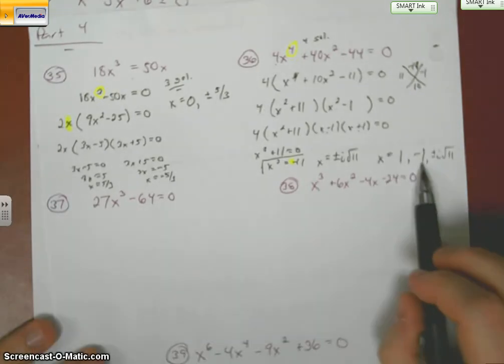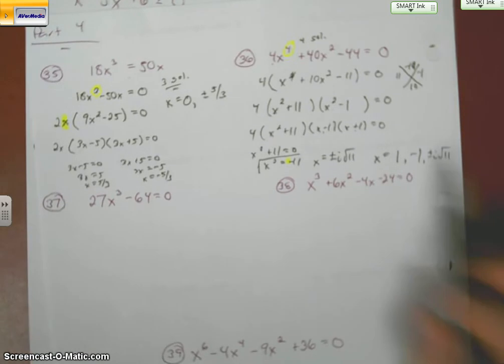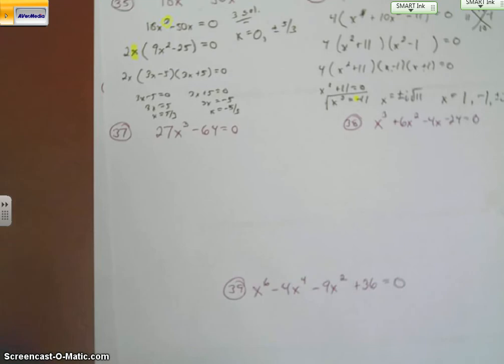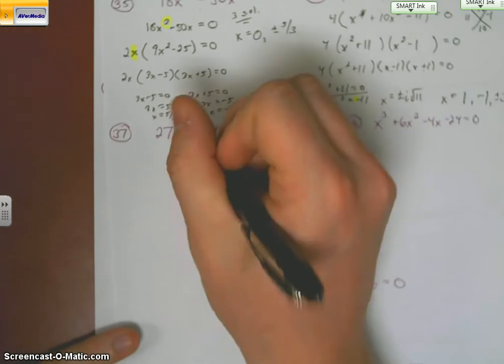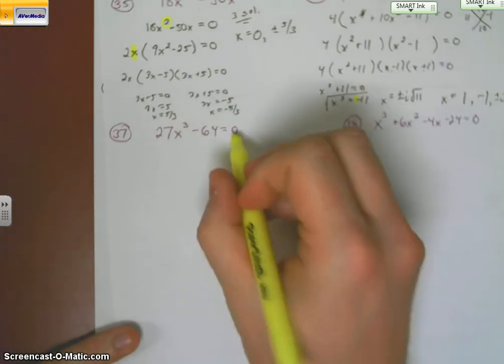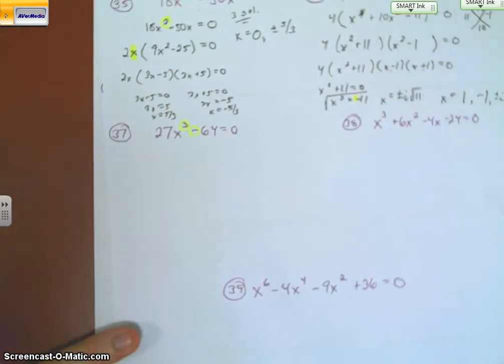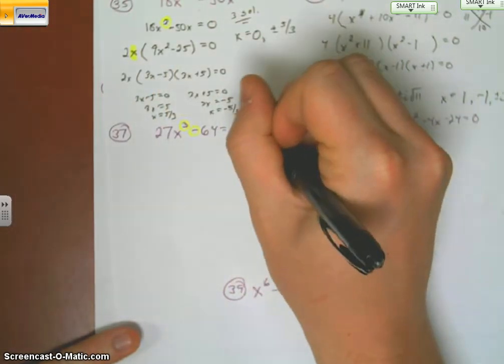1, 2, 3, 4 answers. Let's look at 37. 37, set equal to 0. We have a cube. We have a minus sign. So this is a difference of cubes.